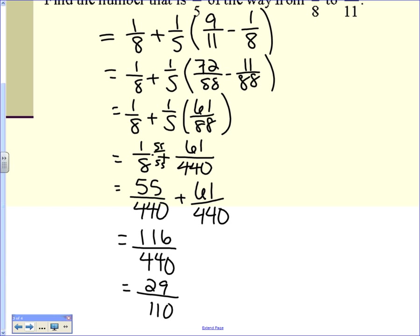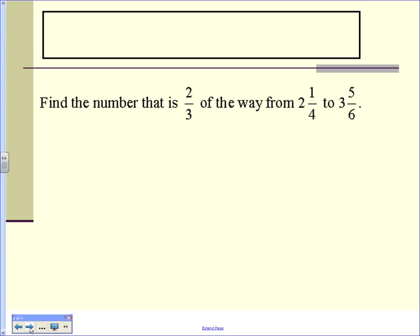If you give me as a decimal, I'm going to mark it wrong. It has to be a fraction. Any questions so far? None? Okay. Looking at another example. Find the number 2 thirds of the way from 2 and 1 fourth to 3 and 5 sixth.